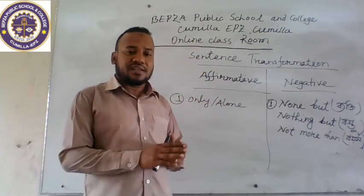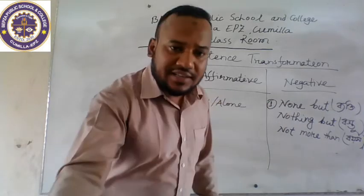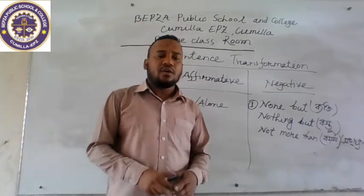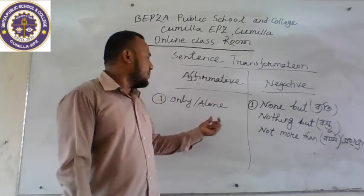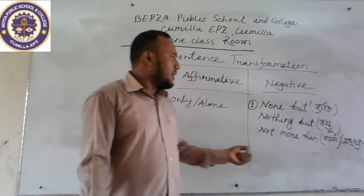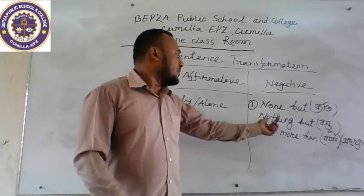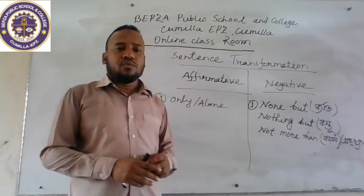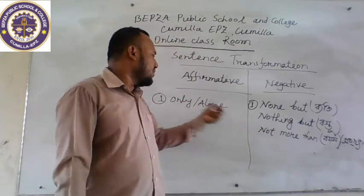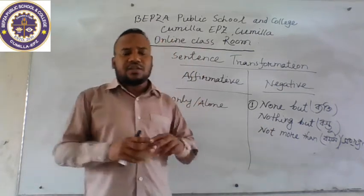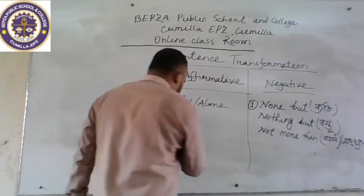This way, the sentence can easily be changed from affirmative to negative. If you get 'none but' in the negative, then to make it an affirmative sentence, we use 'only.' That means we transfer from negative to affirmative. When we get 'nothing but' in the negative and turn it into affirmative, we also use 'only.' So we can read both ways — affirmative to negative and negative to affirmative.